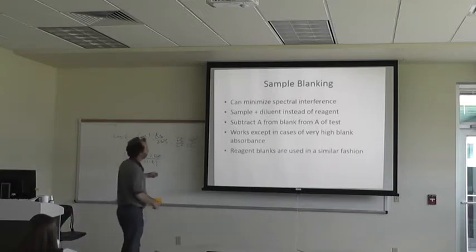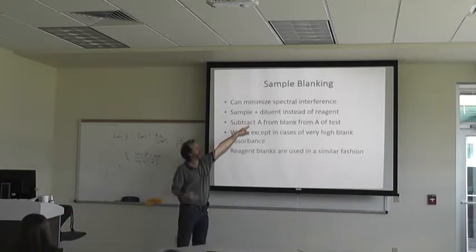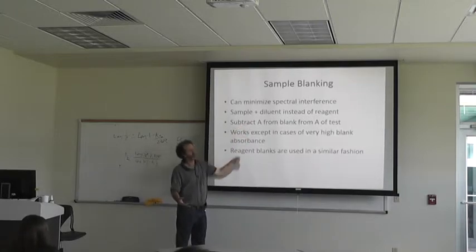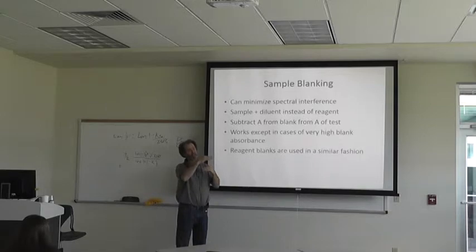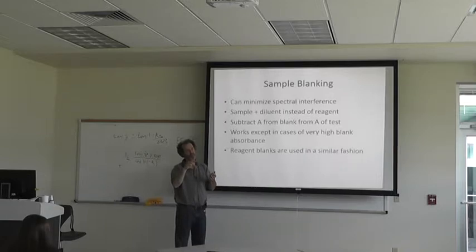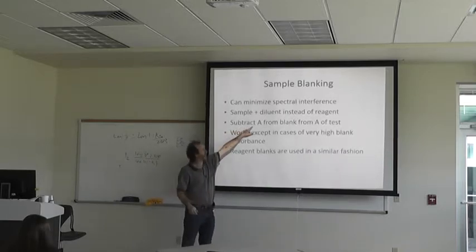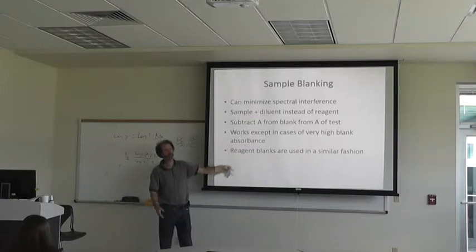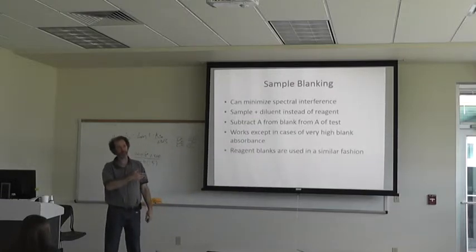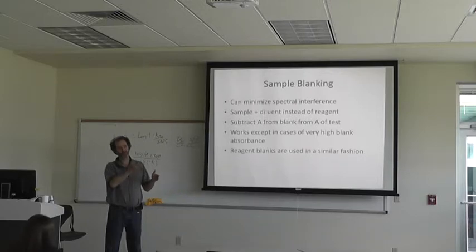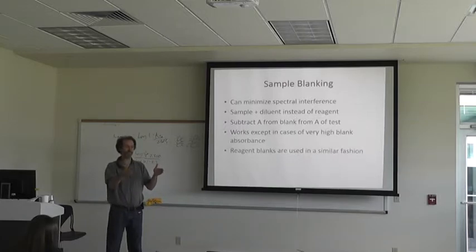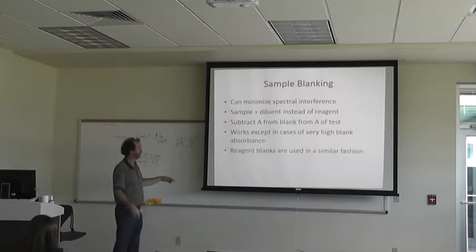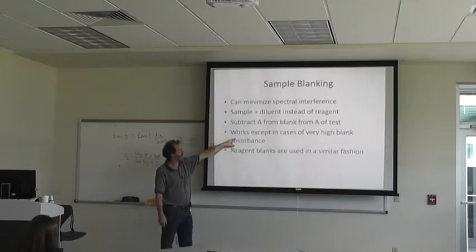Sample blanking can minimize spectral interference. You use the sample plus a diluent instead of the reagent, making sure that the blank contains the exact same matrix as the sample. The only difference should be the analyte itself, and you subtract the blank absorbance from the test absorbance. This works except in cases of very high blank absorbance — if you have really high blank absorbance, that decreases your sensitivity because you have much more error built in.